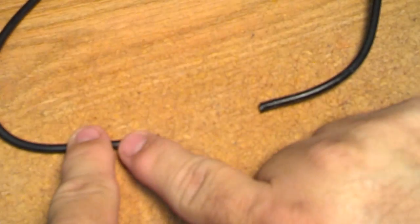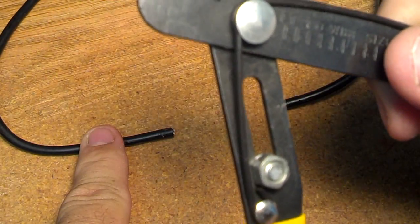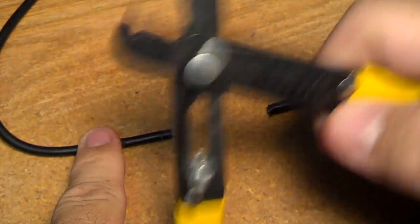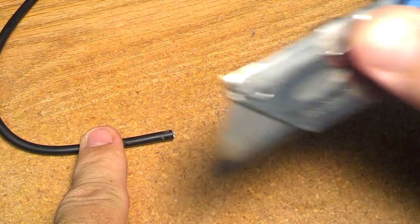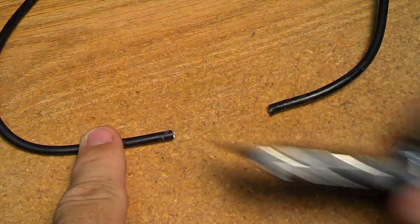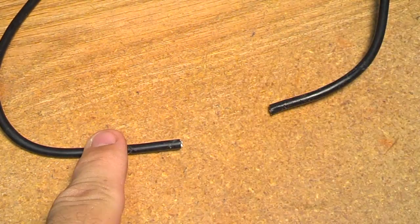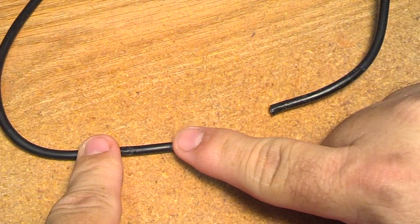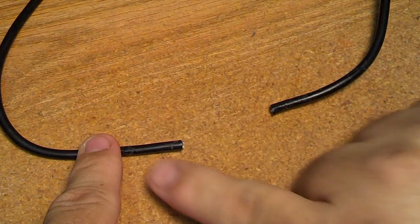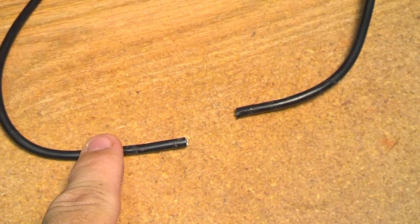The first thing we have to do is strip the outer shield on this. You can either use a pair of wire cutters or you can use a razor knife or razor blade. I'm going to go ahead and use my razor blade instead. I'm going to strip it about, just stabbed myself. Dang it. Knife safety, children. Knife safety. Practice it. I'm going to cut this back about an inch on each side.